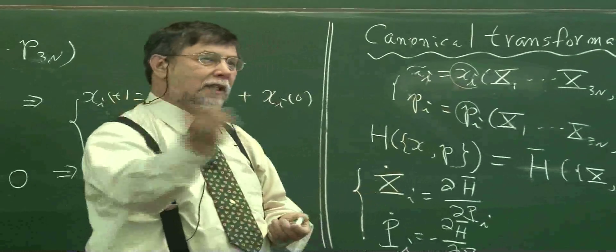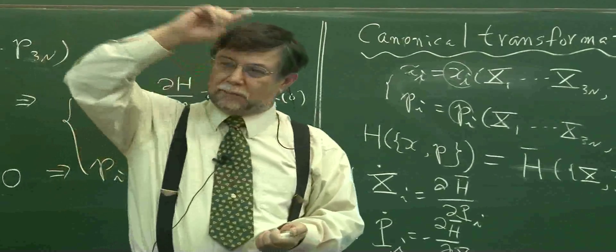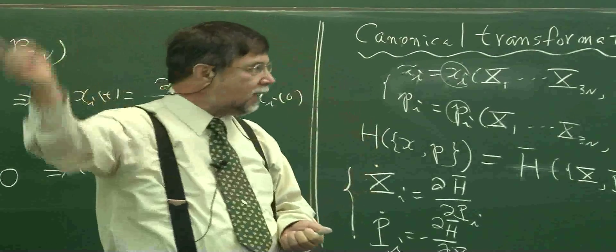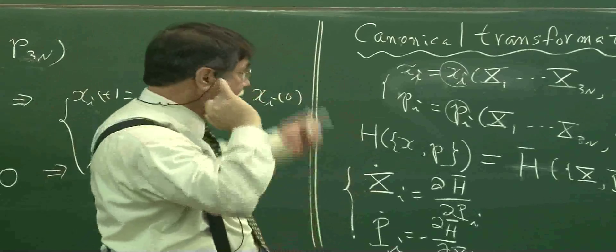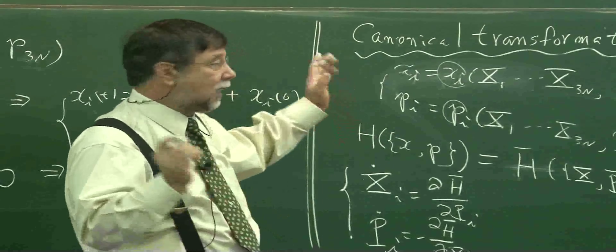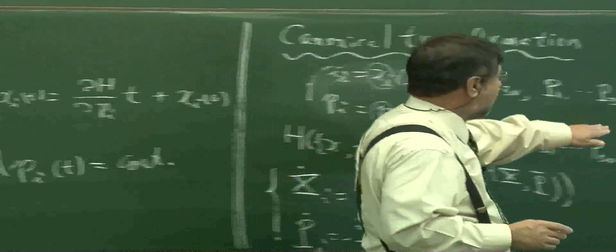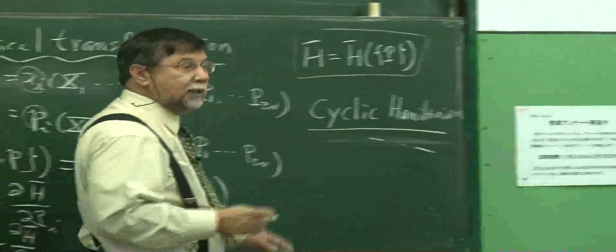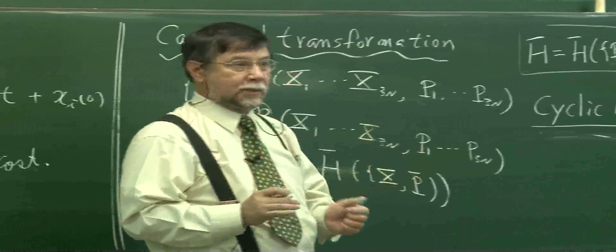Why this is called cyclic is more associated with the motion of planets, some cycle. Often action-angle variables and all that kind of things are related, but that is not important. Anyway, this concept. Now, another important thing.